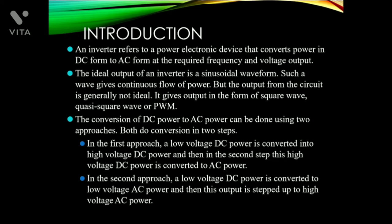The actual output is given in the form of square wave, quasi square wave, or PWM. The conversion of DC power to AC power can be done using two approaches, and both do the conversion in two steps.